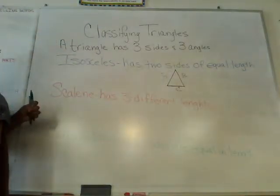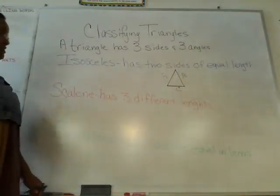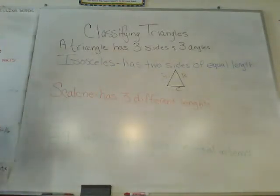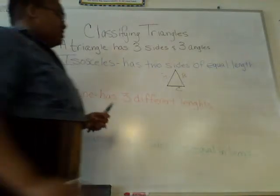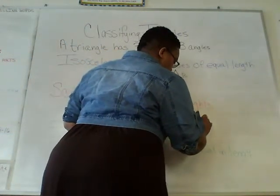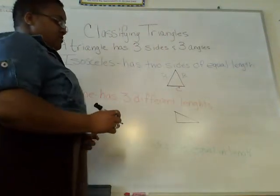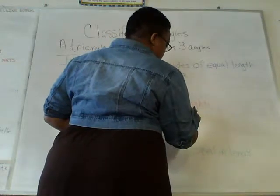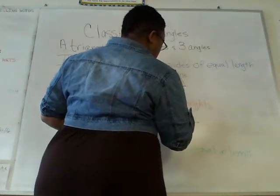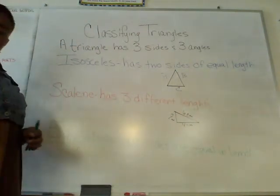The next type of triangle we have is the scalene. The scalene triangle has three different lengths. For example, one side may be six centimeters, another four centimeters, and another two centimeters — just as an example.